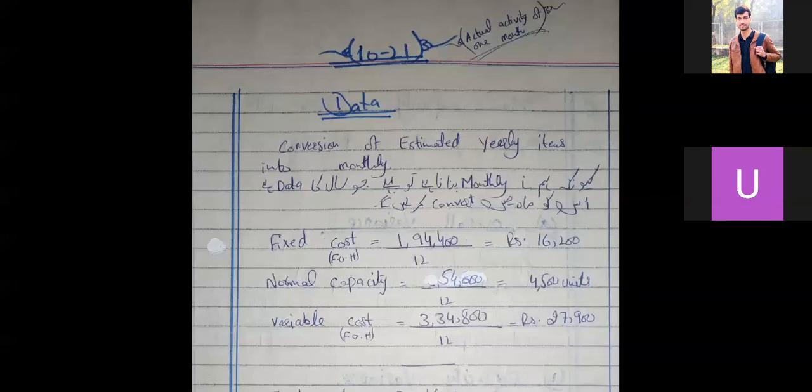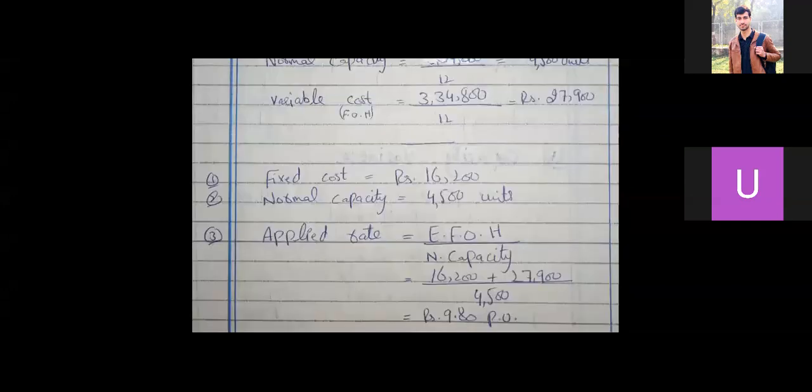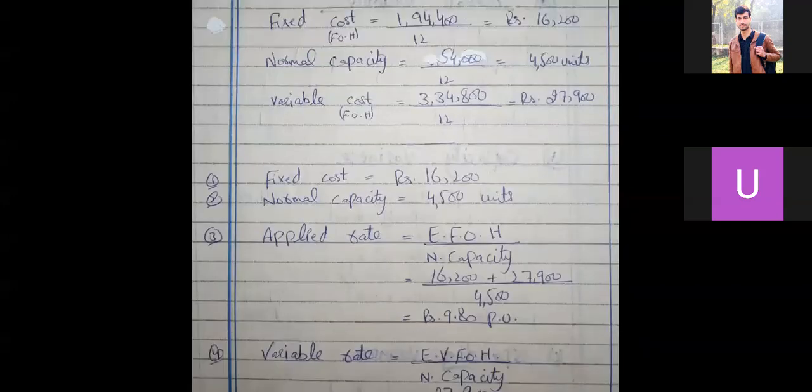Actual activity of one month, which is question number 10.21. Conversion of estimated yearly items into monthly. Fixed cost is Rs. 1,94,400. You have to convert it into months, so you have to divide it by 12. So you get Rs. 16,200.